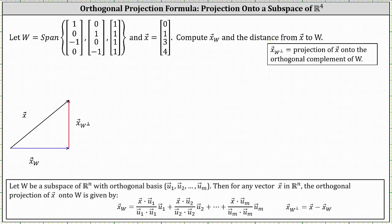Looking at the notes below, let W be a subspace of Rn with orthogonal basis given by the vectors u1 through um. Then for any vector x in Rn, the orthogonal projection of vector x onto W is given by the formula shown here. The quotient of dot products will give us scalars that we then multiply by the vectors forming the orthogonal basis, and we find their sum to determine the orthogonal projection of x onto W.